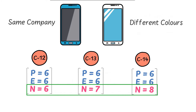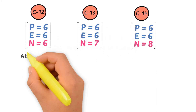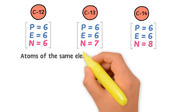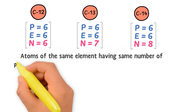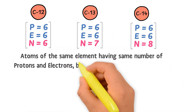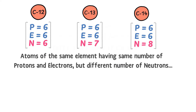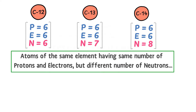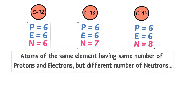We therefore define isotopes as: atoms of the same element having the same number of protons and electrons but a different number of neutrons.